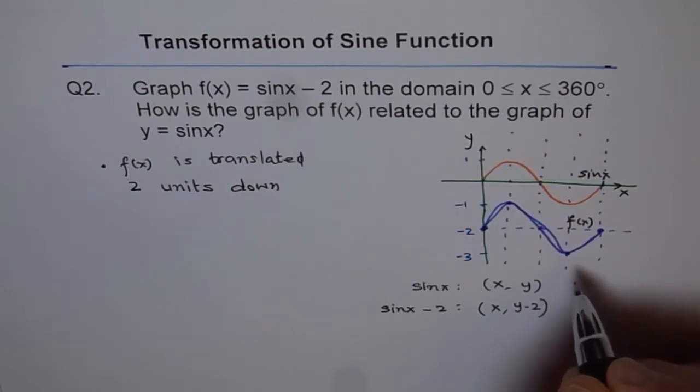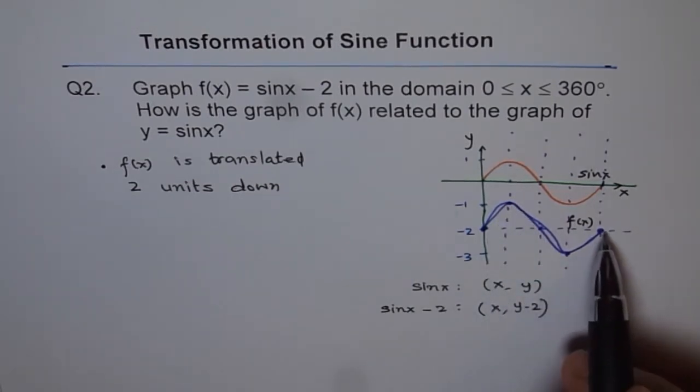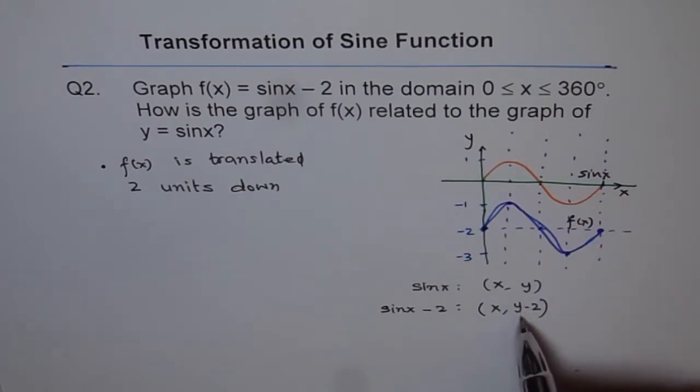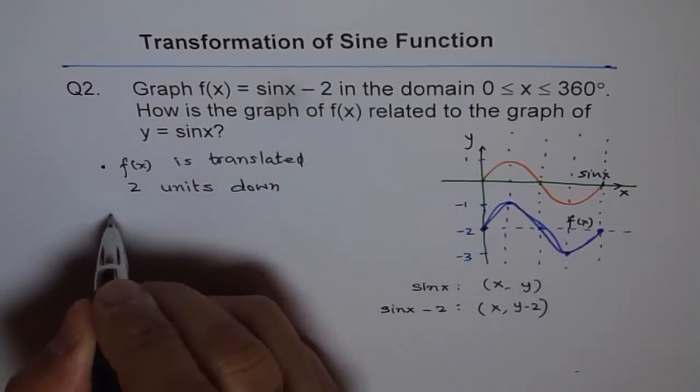Once this translation happens, then you see x values remain same for each and every coordinate on the curve, but the y value changes from y to y - 2. So major changes which we see here is range.